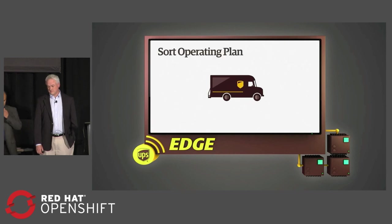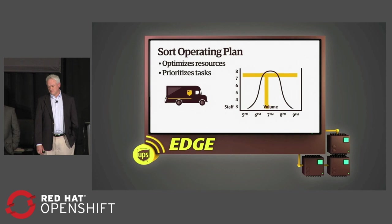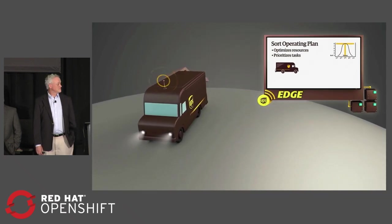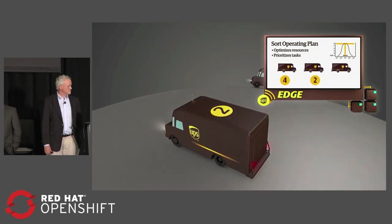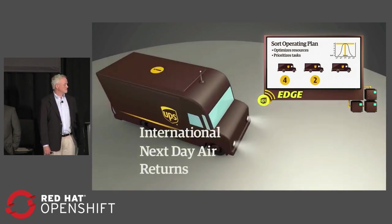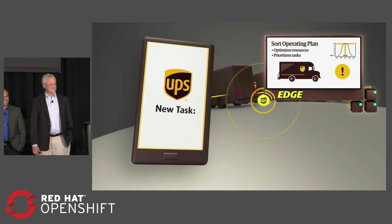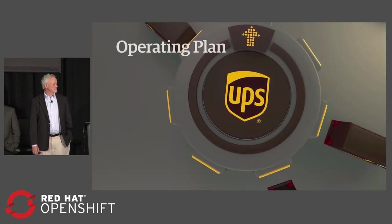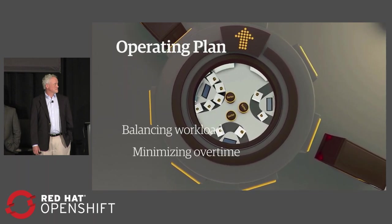In near real time, Edge analyzes and optimizes staffing resources and prioritizes next task instructions for employees unloading and sorting packages. For example, before vehicles return to the facility, Edge begins analyzing data and prioritizes which cars should be unloaded first. If others arrive with higher priority packages, it modifies the sort plan and issues updated tasks wirelessly to unloaders and the management team.